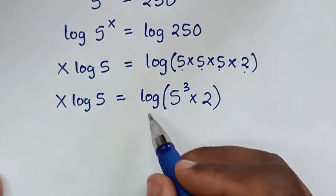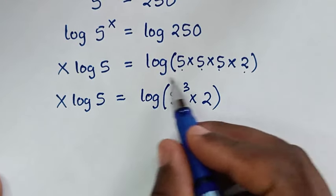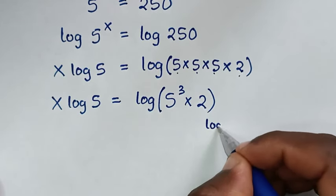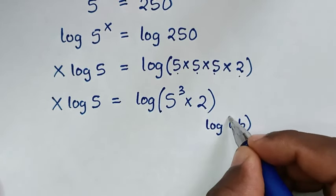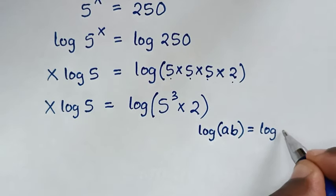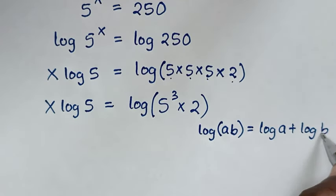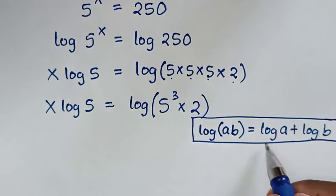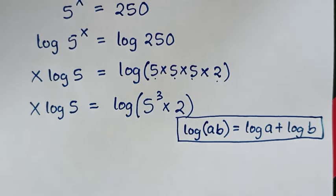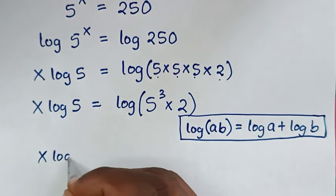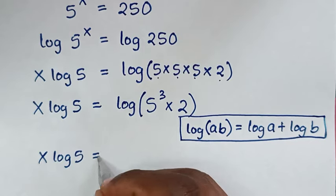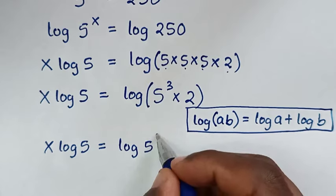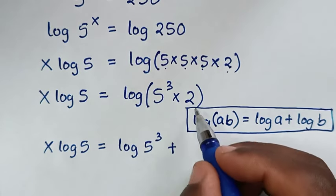In the next step, log of 5 power of 3 times 2 is in the form of the logarithmic rule: log of a times b equals log of a plus log of b. Applying this rule, x times log of 5 is equal to log of 5 power of 3 plus log of 2.